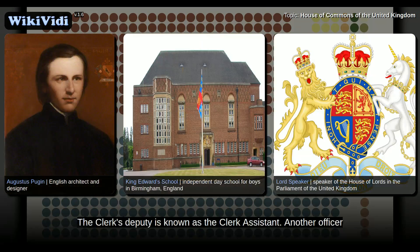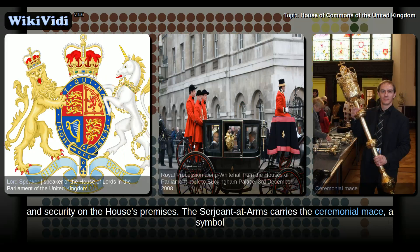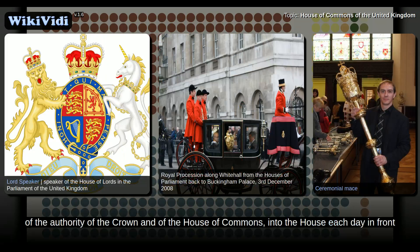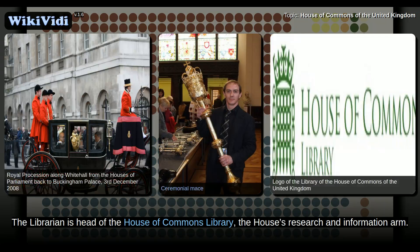Another officer of the House is the Sergeant-at-Arms, whose duties include the maintenance of law, order, and security on the House's premises. The Sergeant-at-Arms carries the ceremonial mace, a symbol of the authority of the Crown and of the House of Commons, into the House each day in front of the Speaker, and the mace is laid upon the table of the House during sittings. The librarian is head of the House of Commons library, the House's research and information arm.